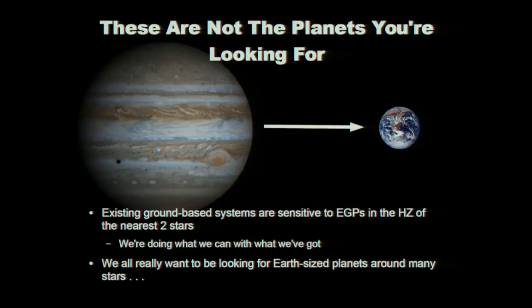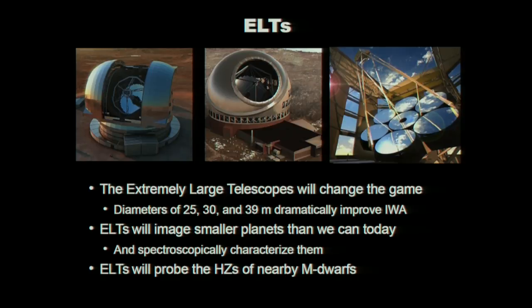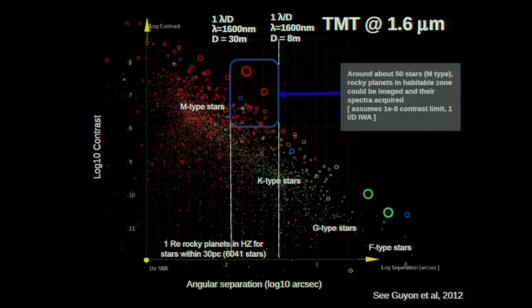All this is really getting ready for the next big thing. The rest of this discussion is about what the ELTs are going to do for us — this is really going to change the game. Those images were taken on a six and a half to eight meter telescope. Ten years from now, we'll have 25 to 40 meter telescopes. This is going to allow us to image smaller planets and characterize them, actually looking for biosignatures. I hope to convince you that the ELTs could probe the habitable zones of a bunch of nearby M stars.